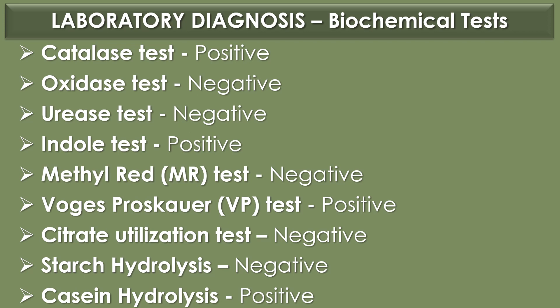Biochemical tests for Bacillus anthracis identification: catalase test, positive; oxidase test, negative; urease test, negative; indole test, positive.